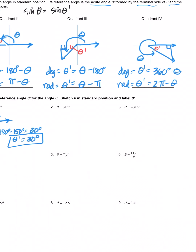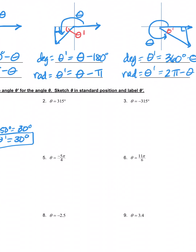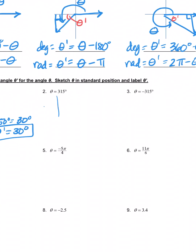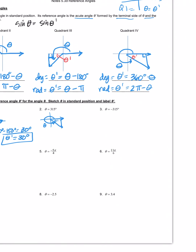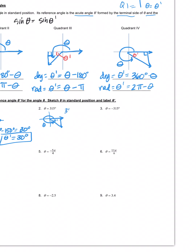Number two: 315 degrees. That falls in quadrant four. Theta prime is the acute angle inside that right triangle. Using the quadrant four rule, I take 360 minus 315, and I get 45 degrees. So theta prime is 45 degrees.